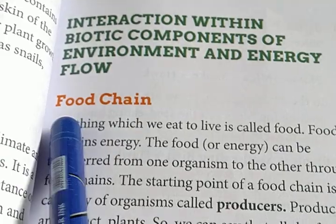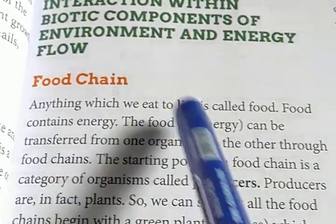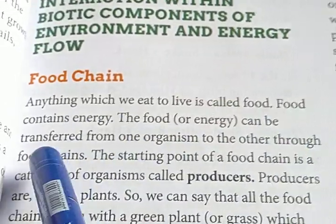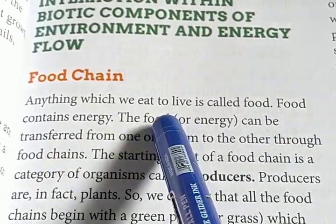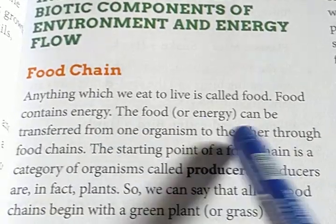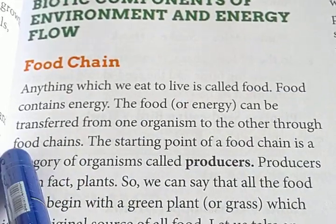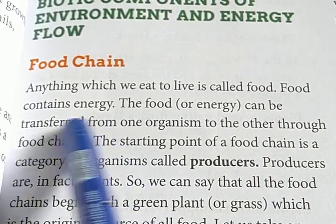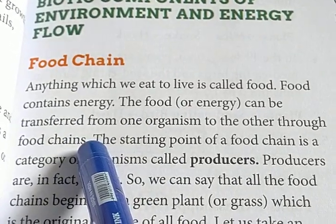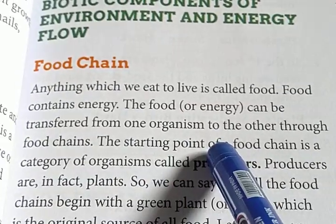The first point is food chain. Anything which we eat to live is called food. Food contains energy. The food can be transferred from one organism to another organism through food chains. A food chain is a kind of chain along which energy is normally transferred from one organism to another organism.